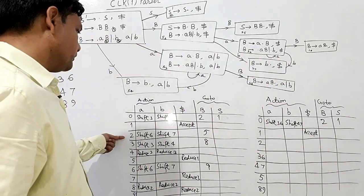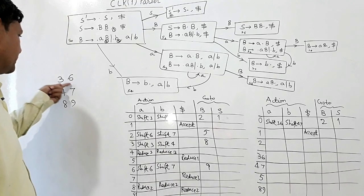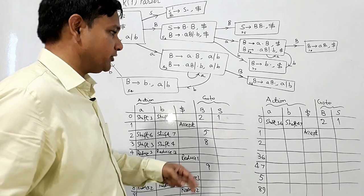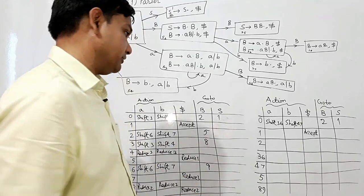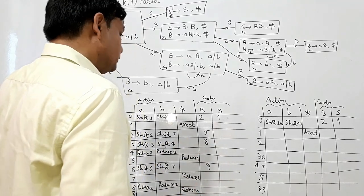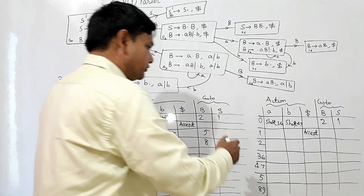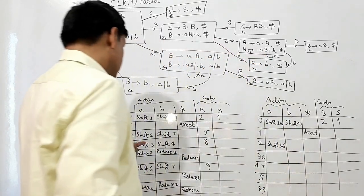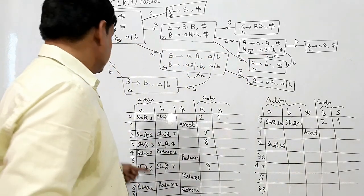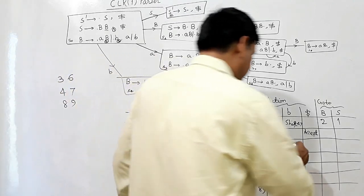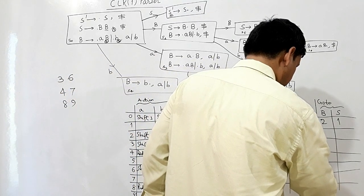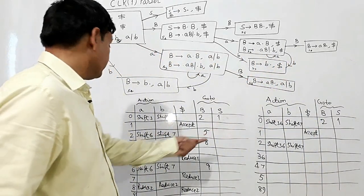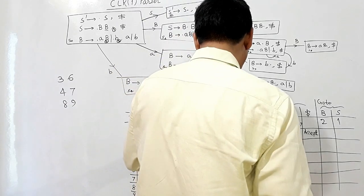In state 2, there is shift 6, and since 6 is merged with 3, I write shift 3,6 here. Similarly, 7 is merged with 4, so I write shift 4,7. State 5 is not merged with any other state, so it remains as 5.